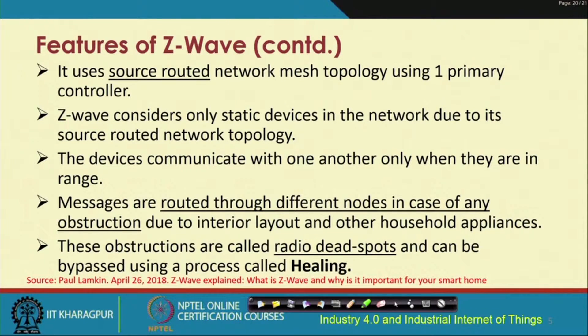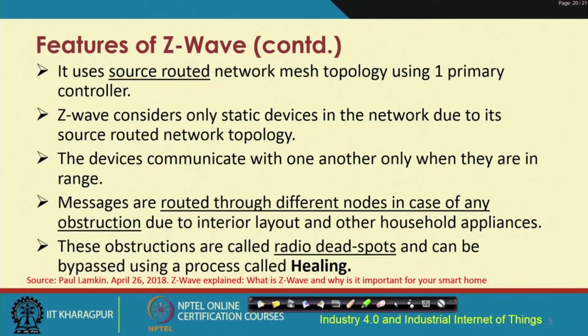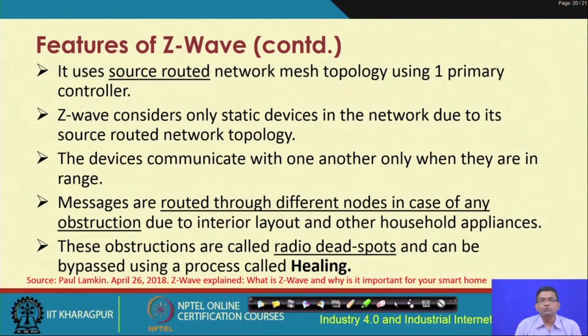The routing scheme used in Z-Wave is source routing, meaning the source node determines the route and sends the packet through the network using routes it has determined. Z-Wave considers only static devices due to its source-routed network topology. Messages are routed through different nodes in case of any obstruction; obstructions caused by interior layout and household appliances create radio dead spots, which can be bypassed using a process in Z-Wave known as healing.